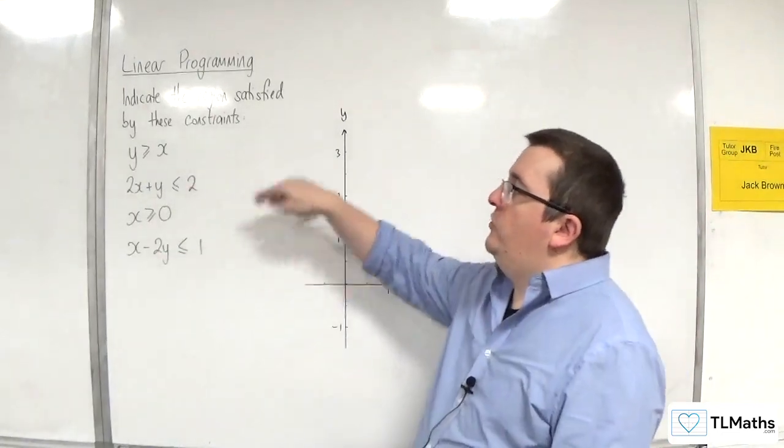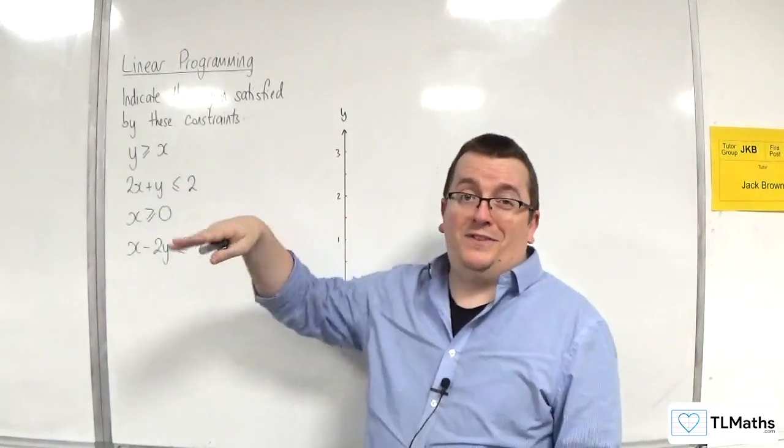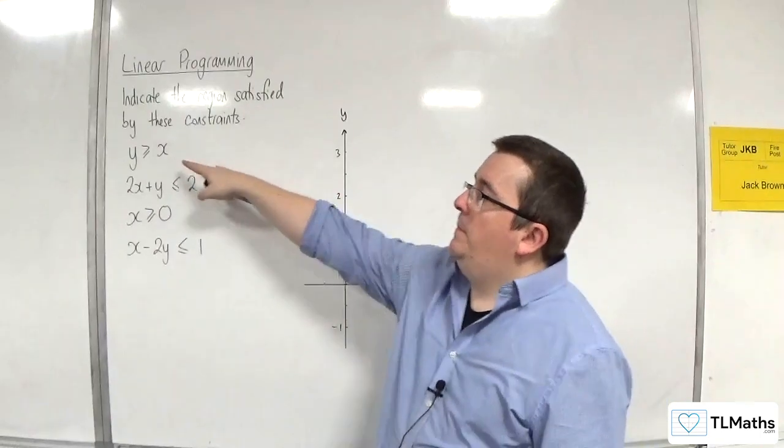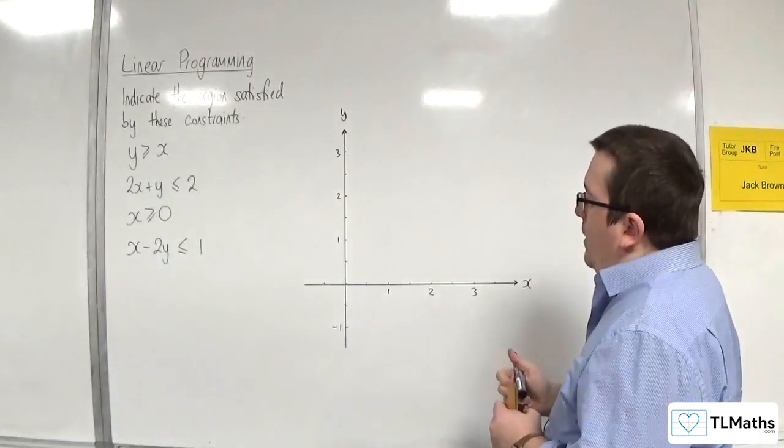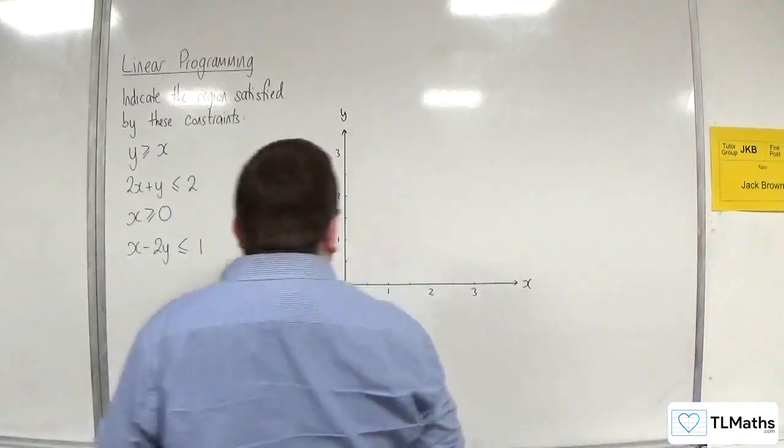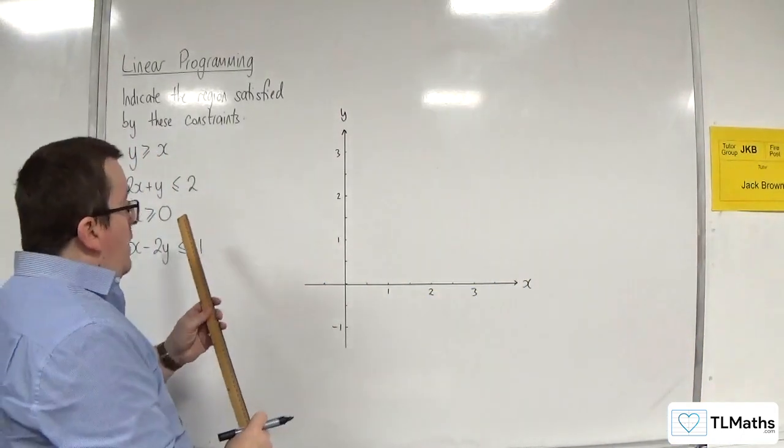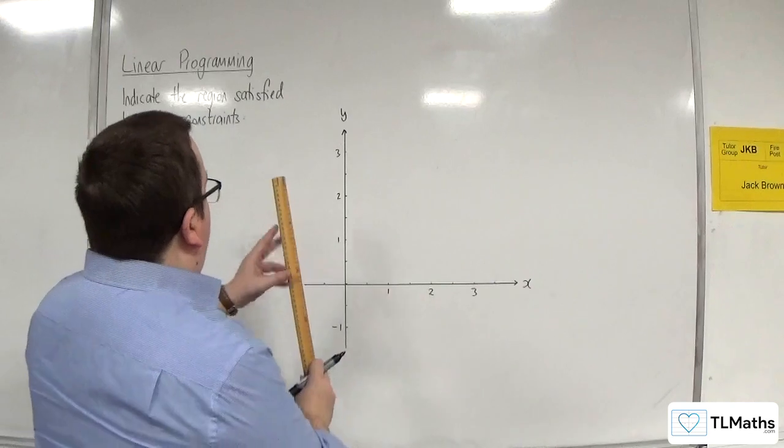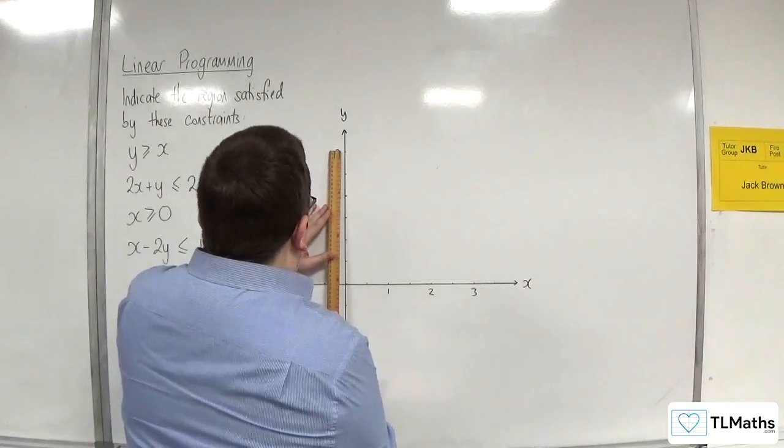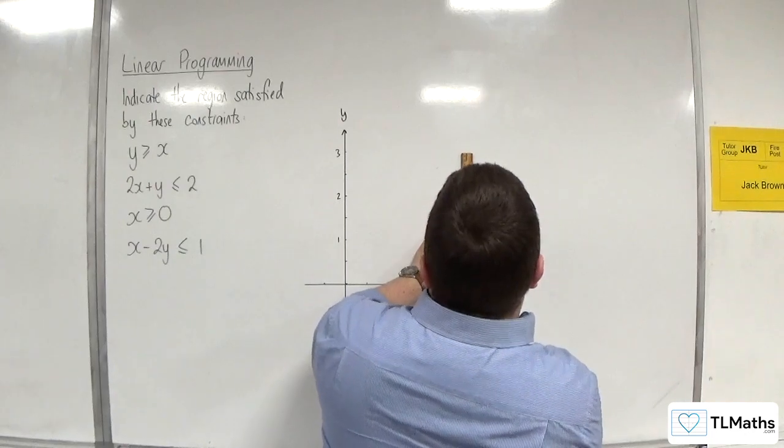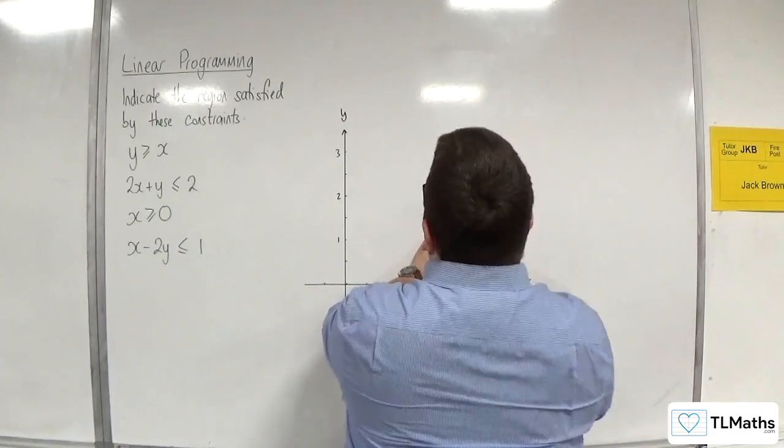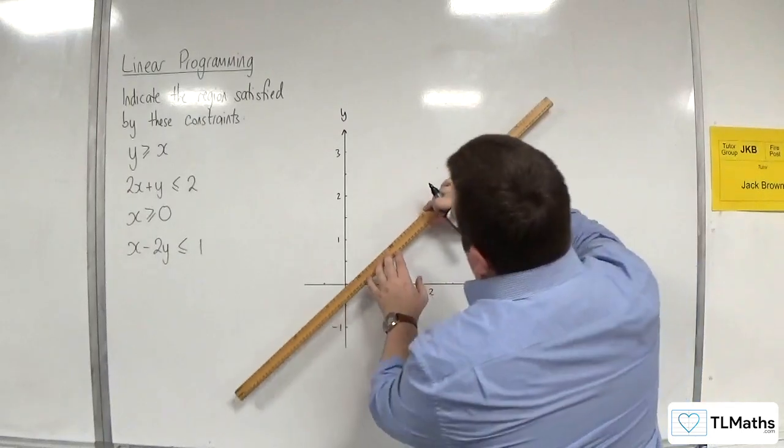So when you draw these, just ignore the inequality for the time being, and just think about y equals x. So we need to draw on the line y equals x. So we'll try and do this as accurately as possible. So I've got to have it going through 0, 0, and I'm going to choose 3, 3.